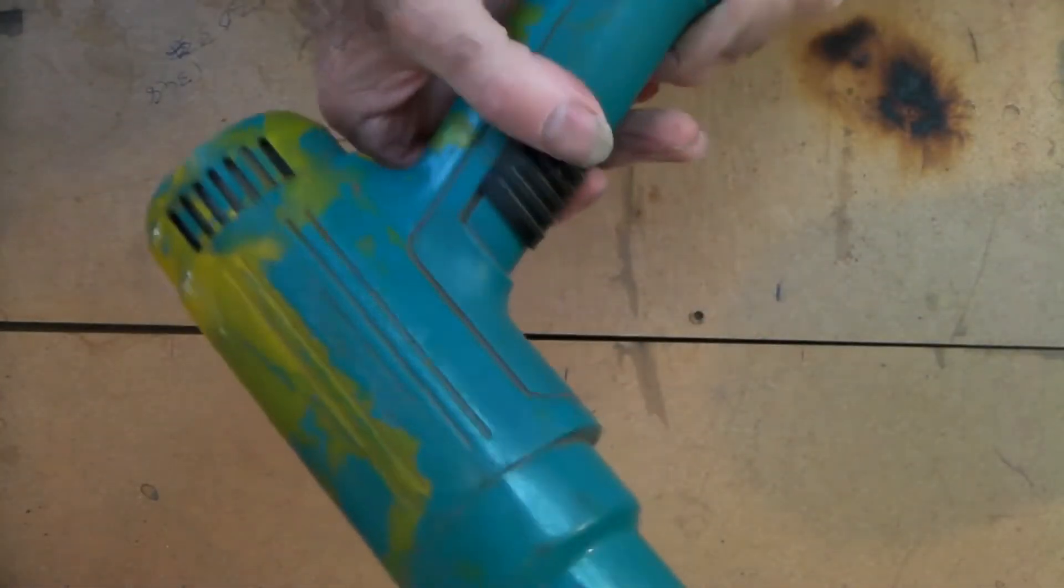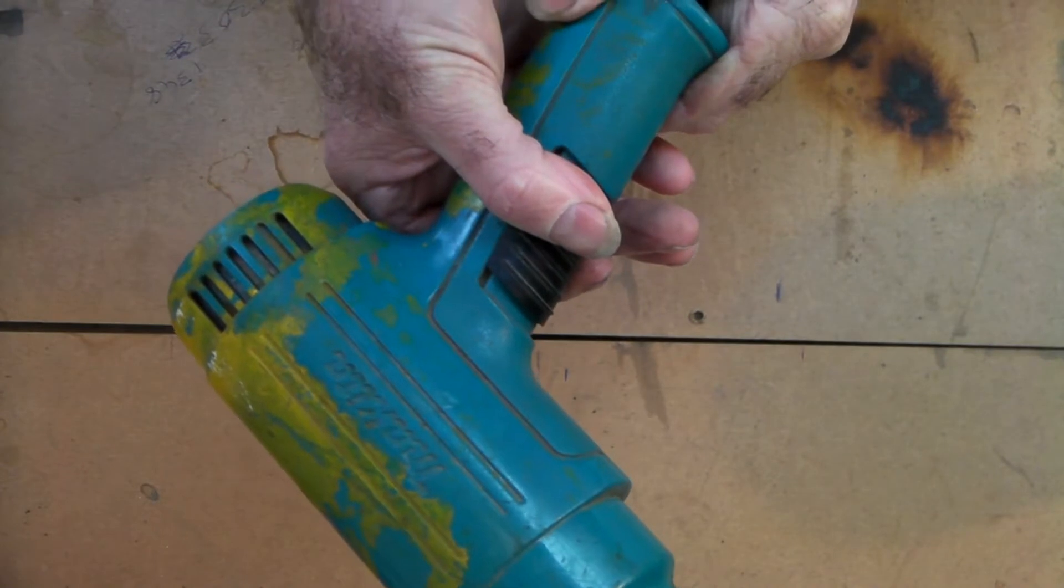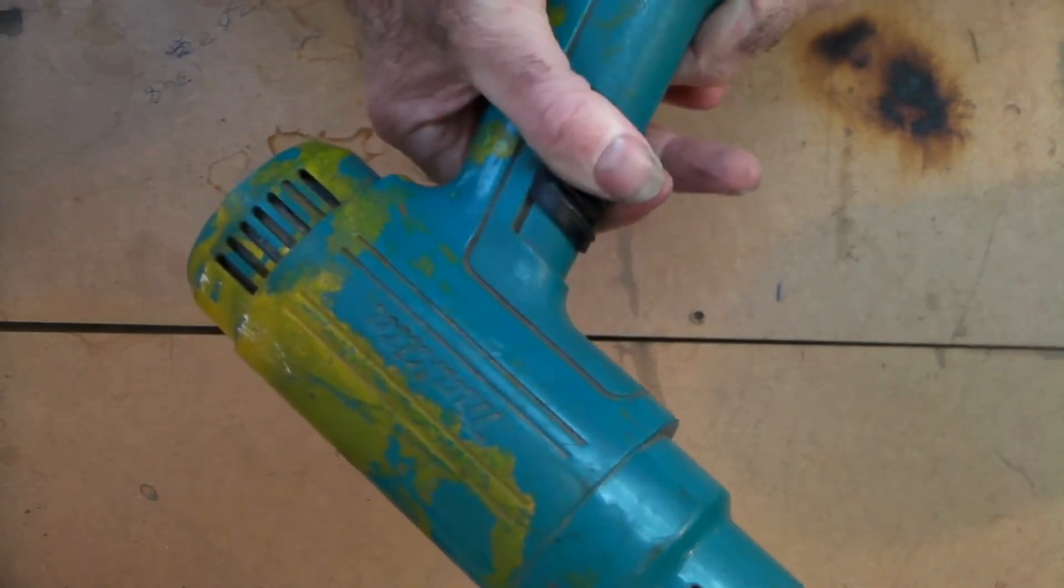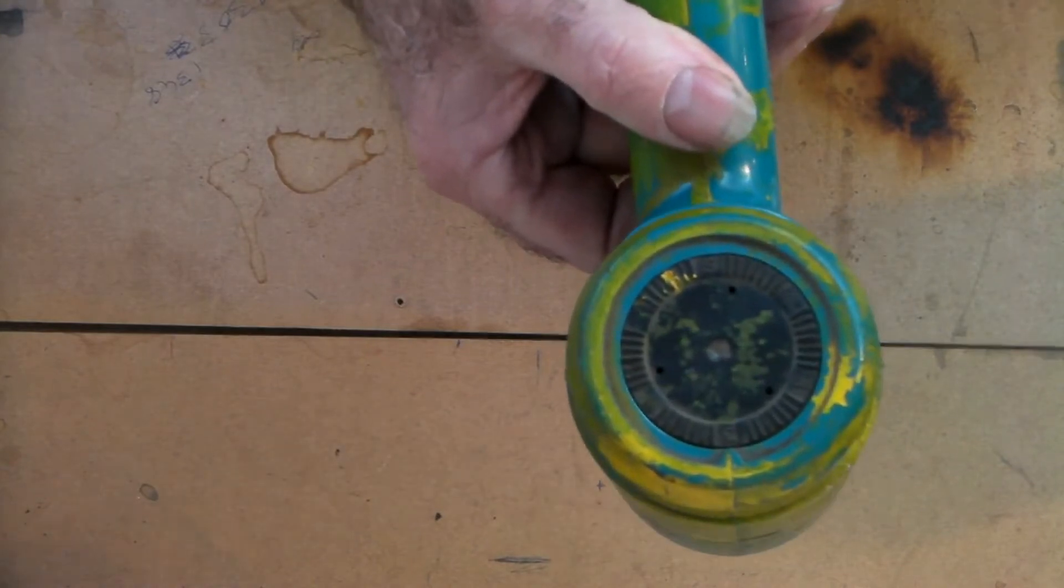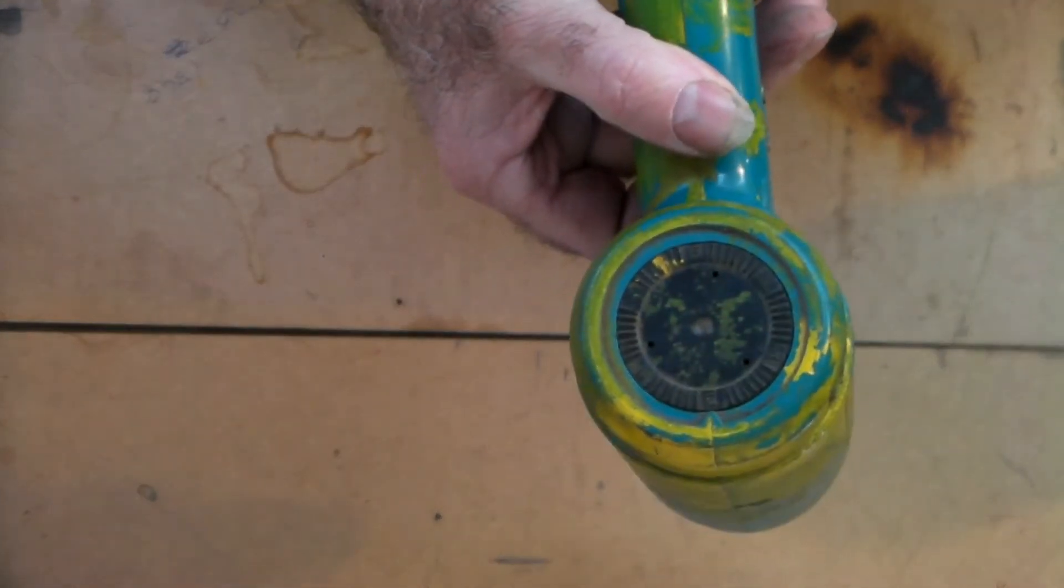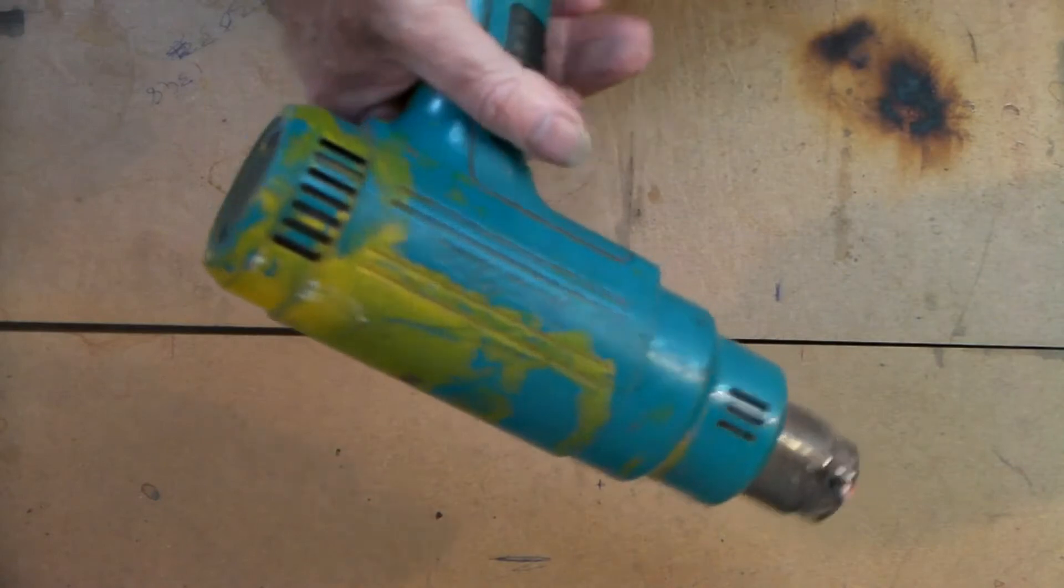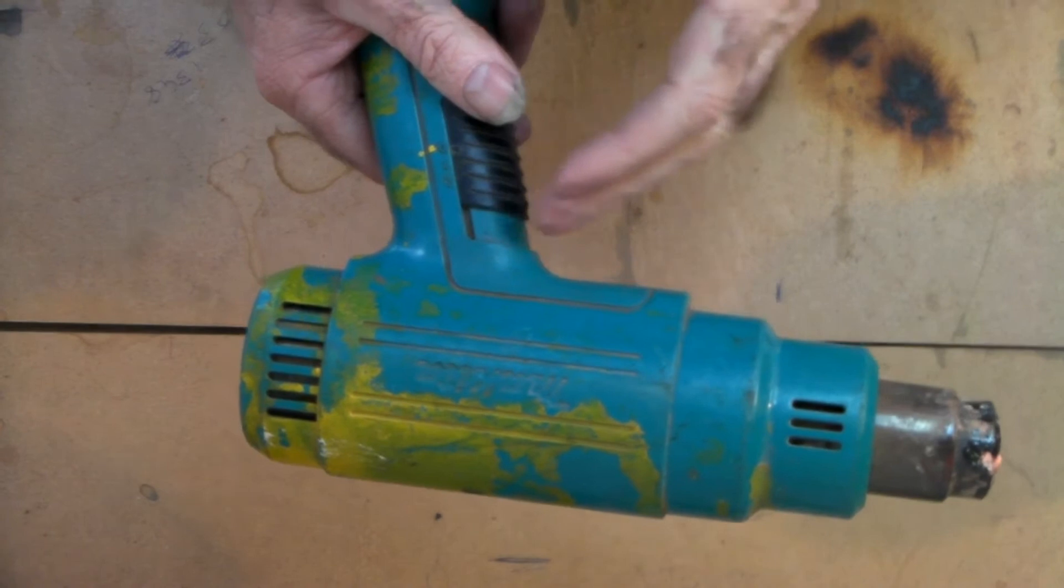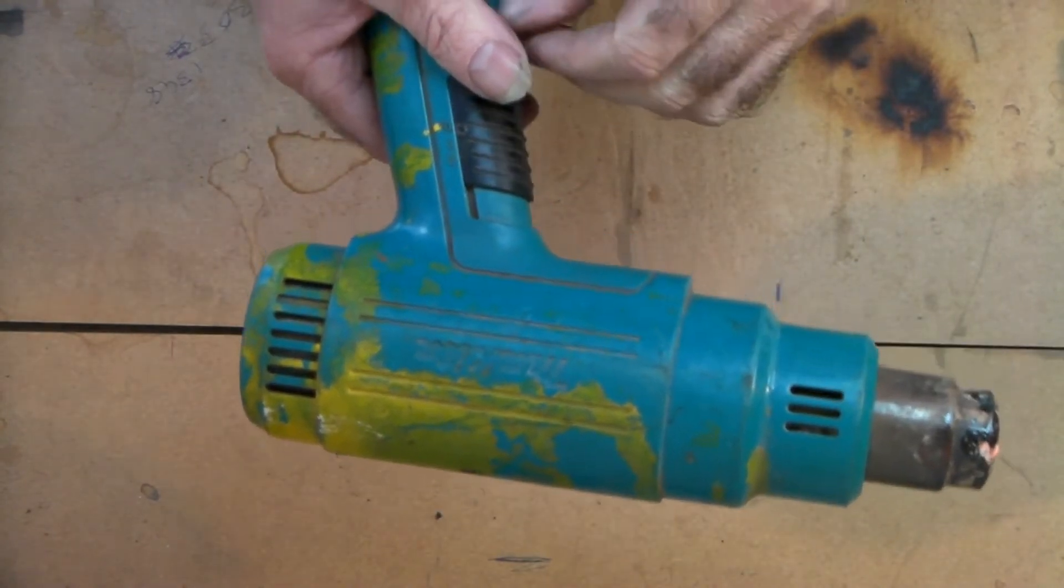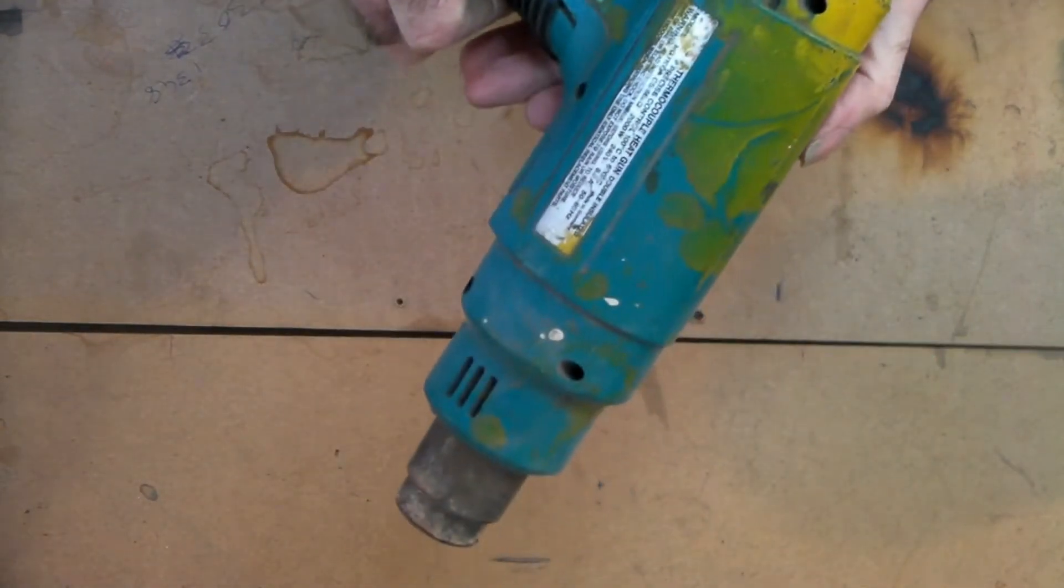Hey guys, this is my old Makita. It's a two speed with five setting temperature control on it. I don't know if you can see that guys, it's got five settings there anyway. It ranges from about 400 degrees to about 1200 degrees. It's not too bad actually.